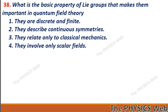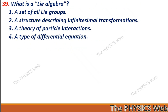Next: what is the basic property of Lie groups that makes them important in quantum field theory? They describe continuous symmetries. So, two is your correct option. What is a Lie algebra? It is a structure that describes infinitesimal transformations. So, two is your correct option.